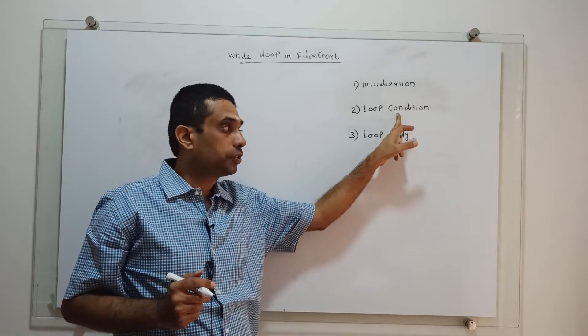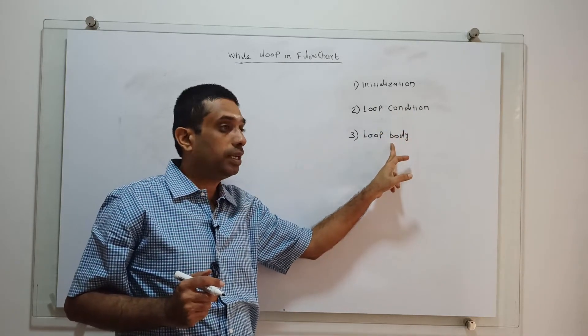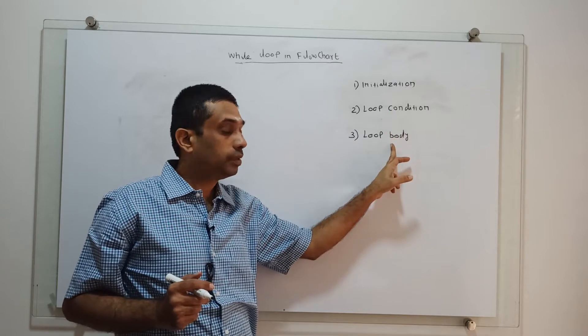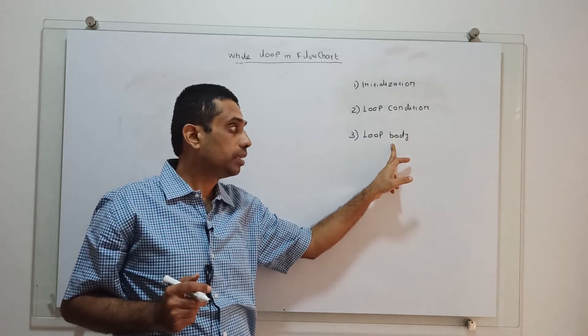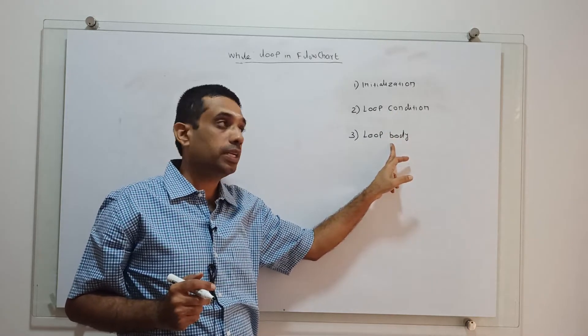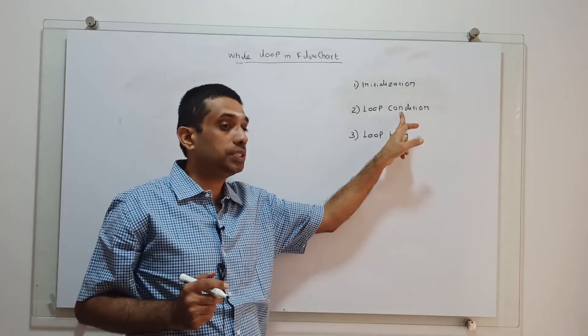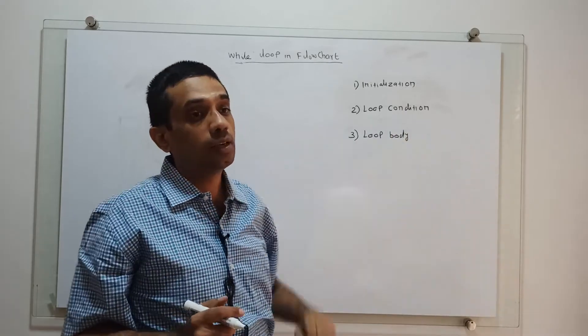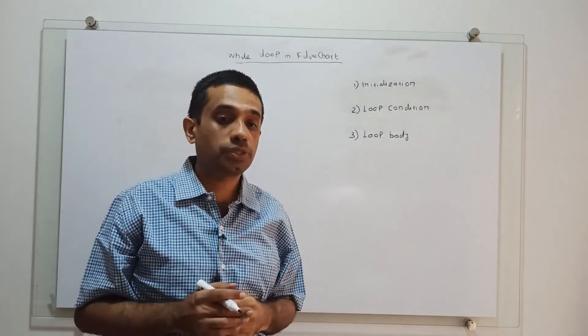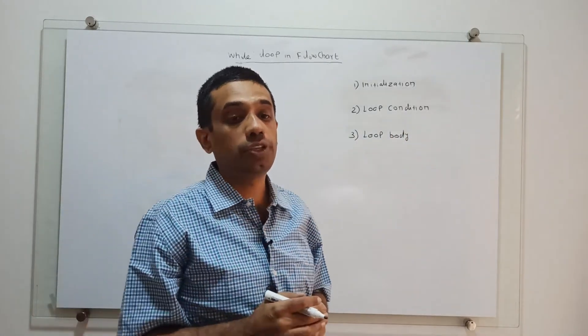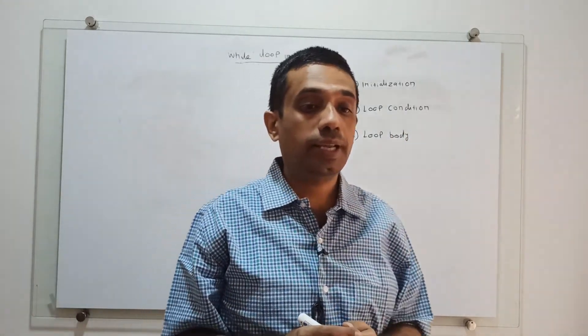Until the condition is true, the body of the loop will get executed again and again. Once the condition is false, the control will go out of the loop. So for this, we are going to draw a flowchart.